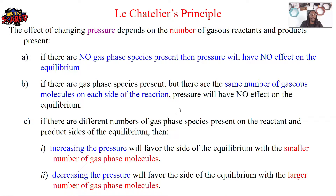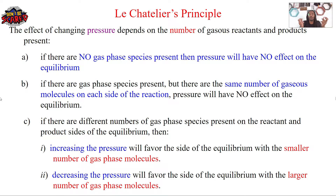Point B: if there are gas phase species present, but there are the same number of gas molecules on each side of the reaction, pressure will once again have no effect on equilibrium. So if you don't have any gas, or if you have the same number of gas molecules on both sides of your reaction, pressure will not impact it.